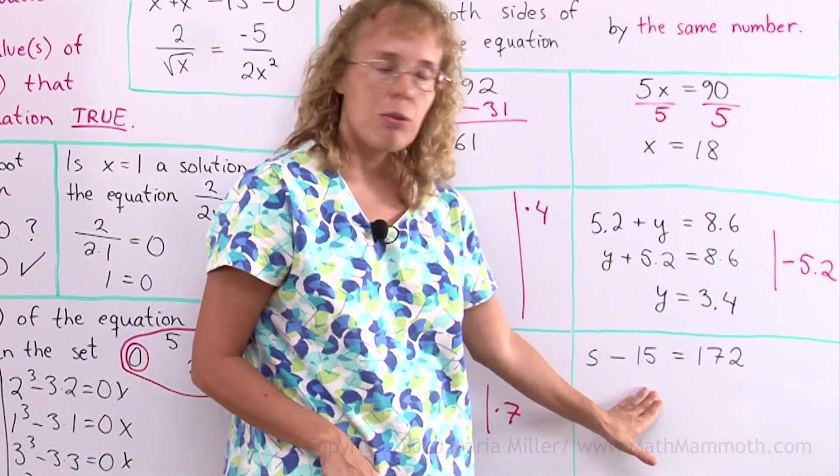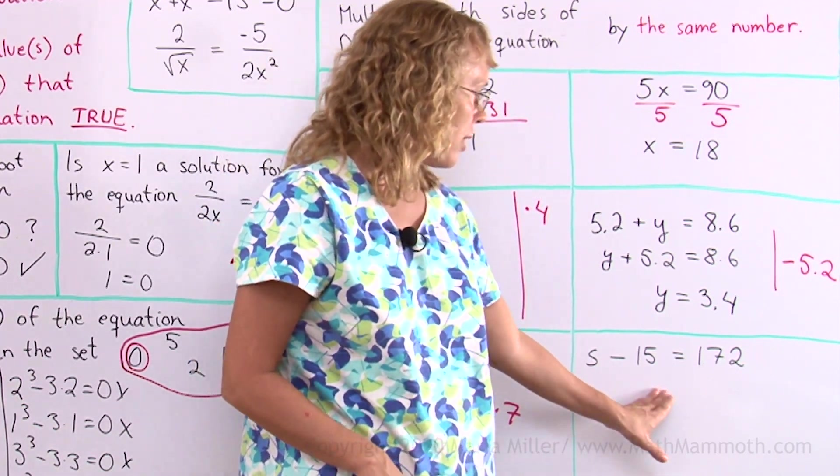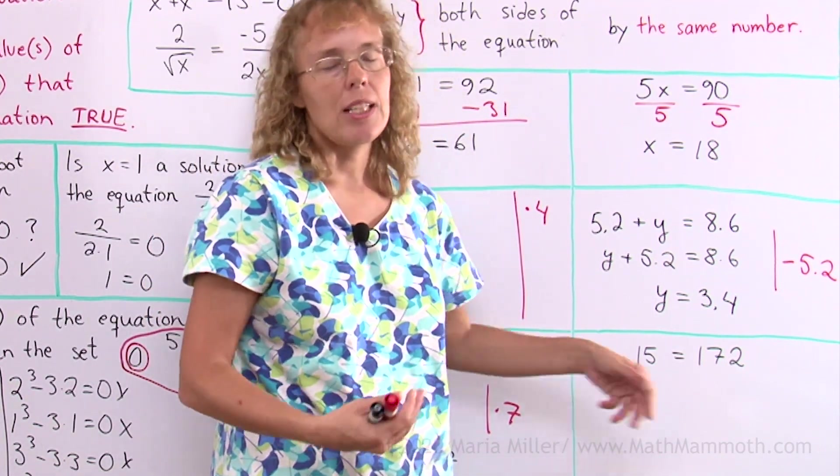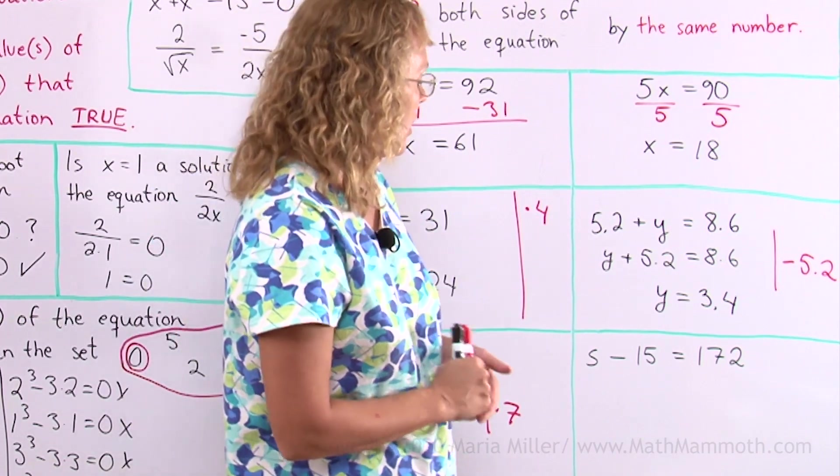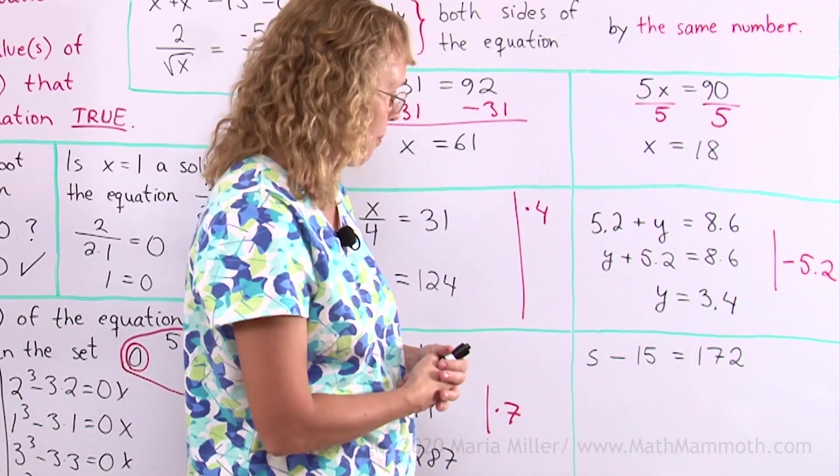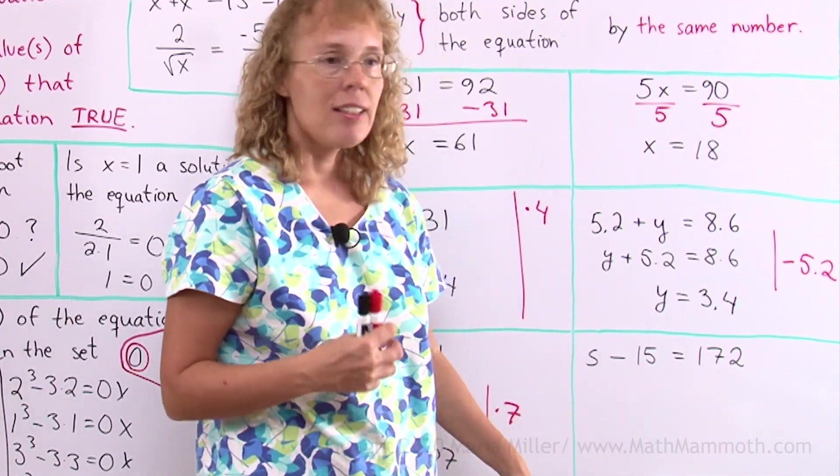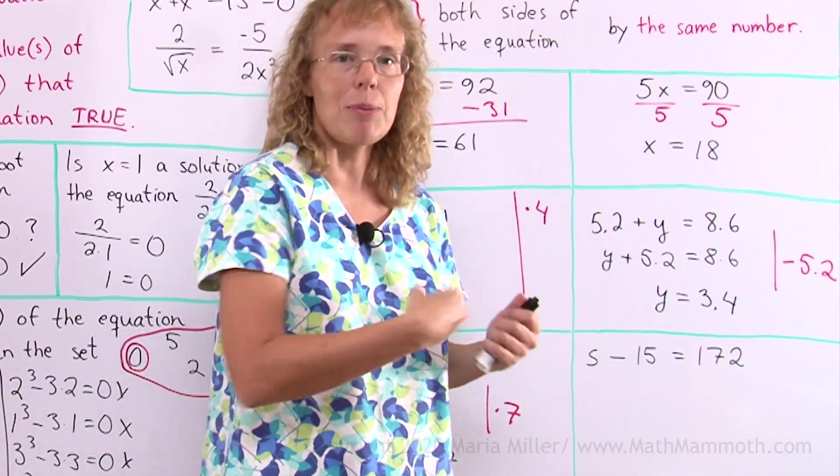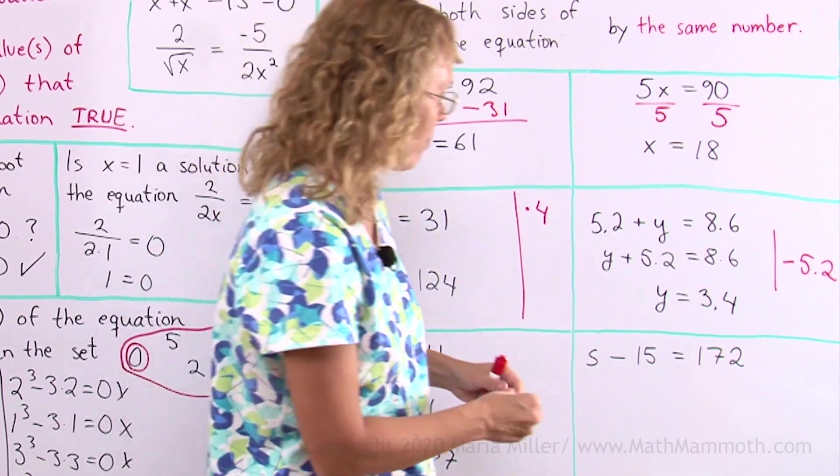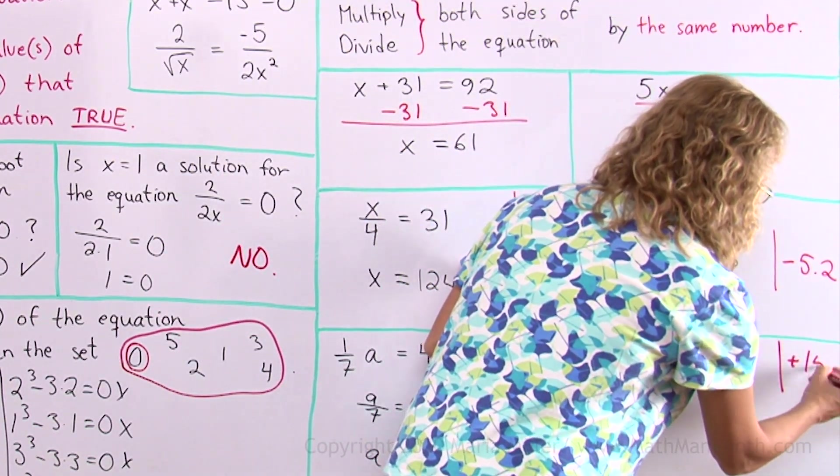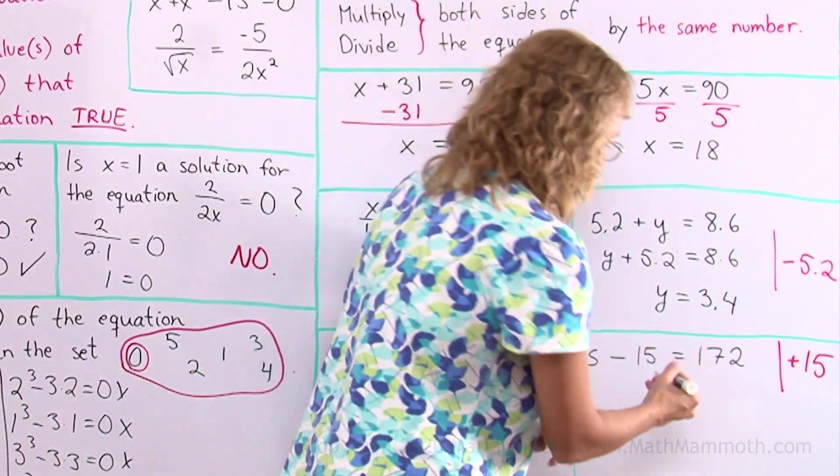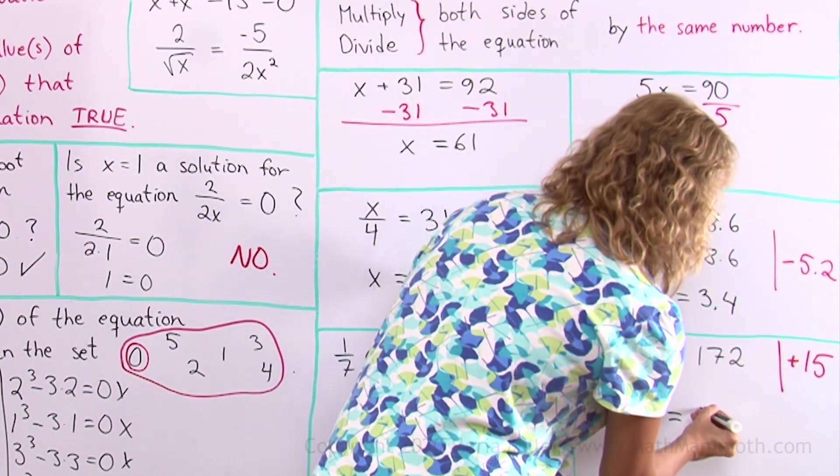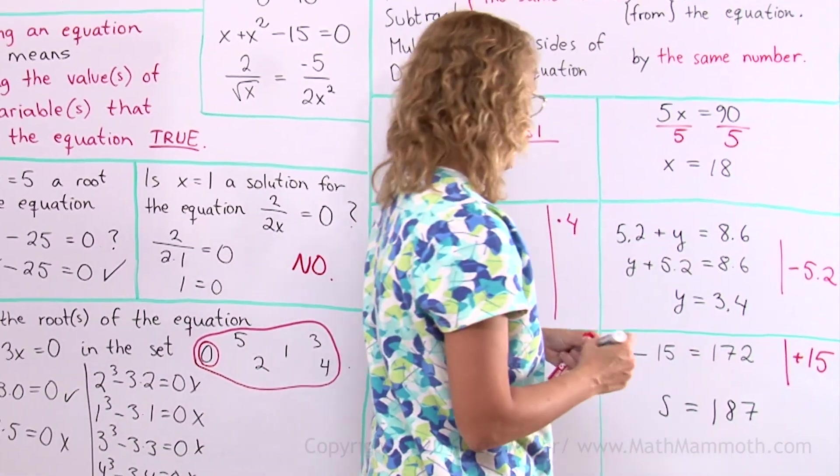Lastly, the subtraction equation. S minus 15 equals 172. We are subtracting 15 from the variable. So that's why it's called the subtraction equation. It is solved by adding, the opposite operation again. If I add 15, then minus 15 plus 15 will cancel each other. It's like doing nothing. If you subtract 15, add 15, then that's nothing. So what I will do is I will add 15 to both sides. And then that leaves S alone here. On the other side, I have to add in my head. I get 180 and 7.